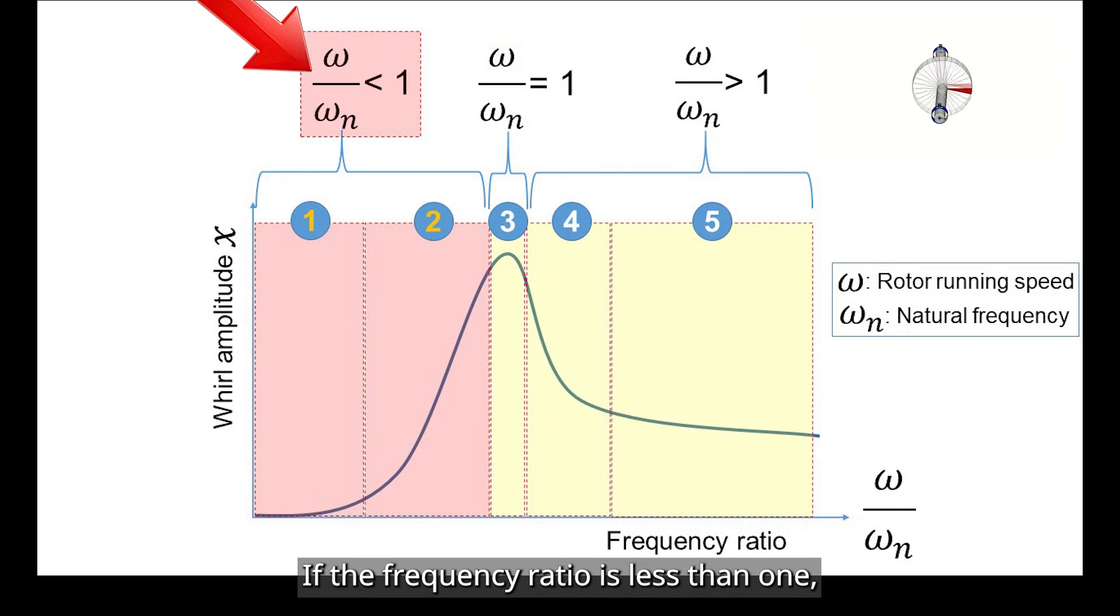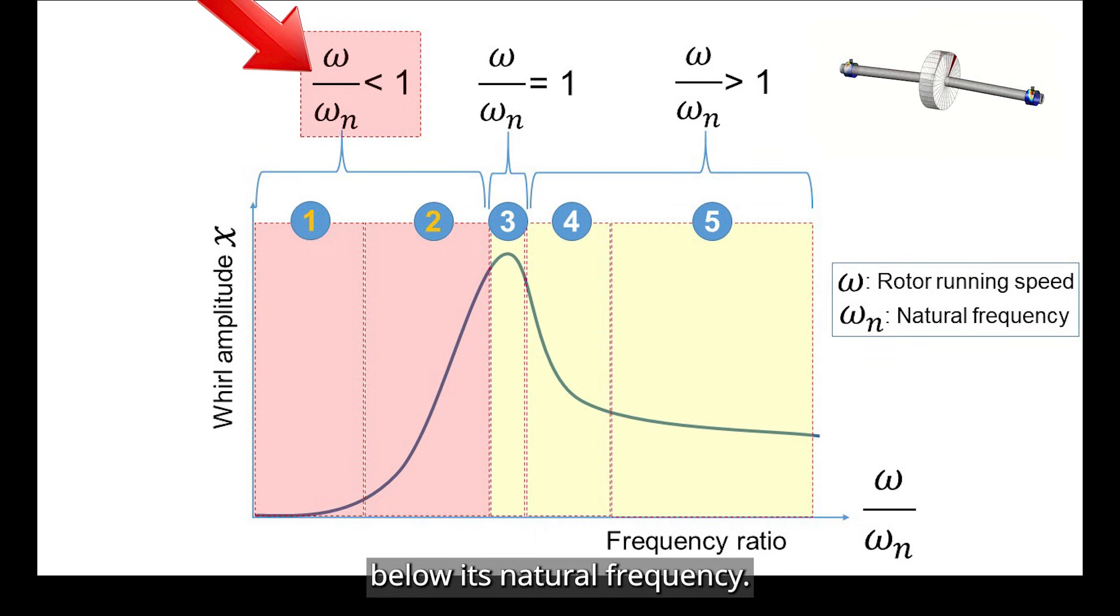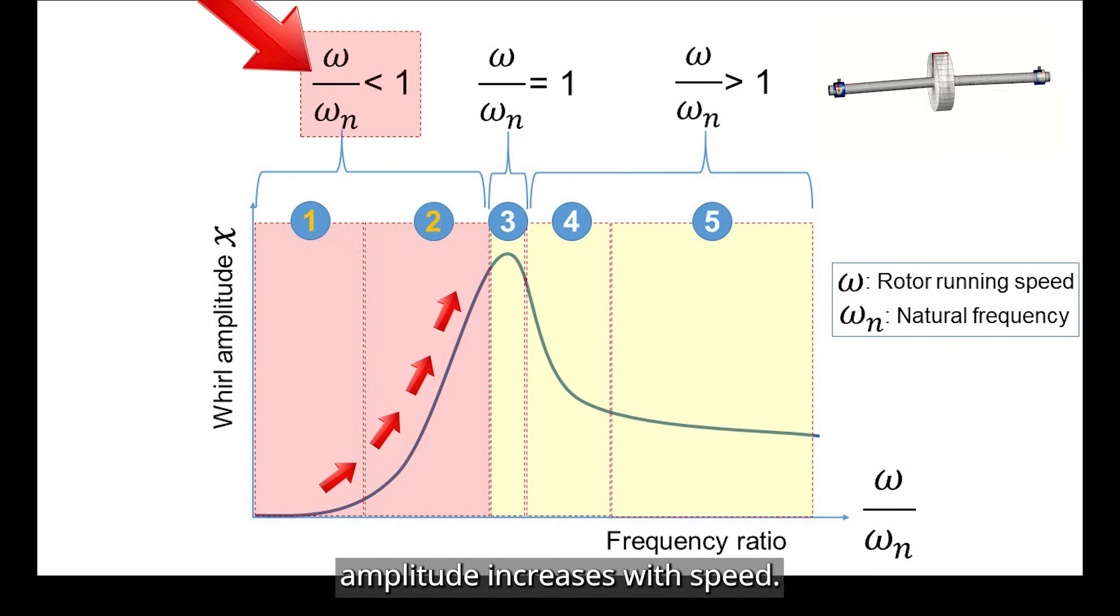If the frequency ratio is less than 1, the rotor is spinning below its natural frequency. In this region, the vibration amplitude increases with speed.